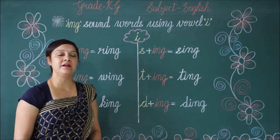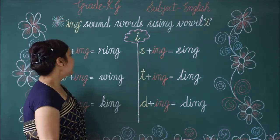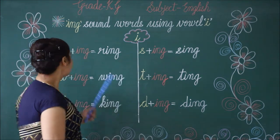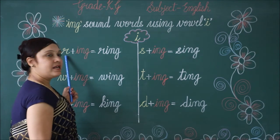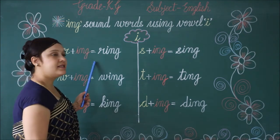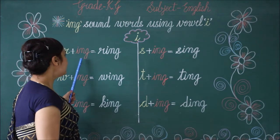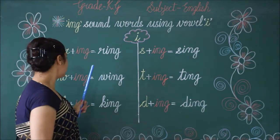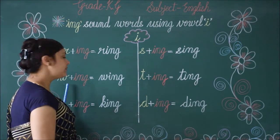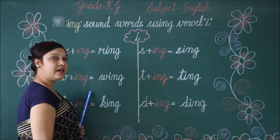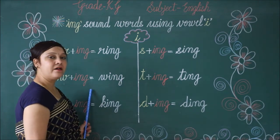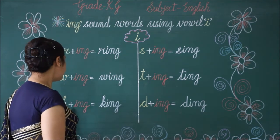Children, now we will read these ing sound words. R is rh, I-N-G is ing. R-I-N-G. Ring. W-I-N-G is ing. W-I-N-G. Wing.